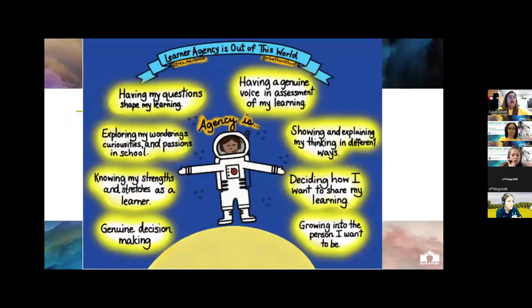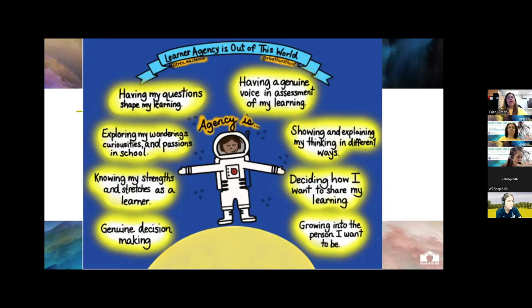Here's a little visual of what student or learner agency is. It's having a genuine voice in their assessment of their learning; showing and explaining thinking in different ways; deciding how they want to share their learning; growing into the person that they want to be; making genuine decisions; knowing their own strengths and how they can stretch as learners; exploring wonderings, curiosities, and passions within the school day; and having questions help to shape their learning.